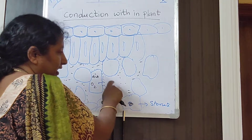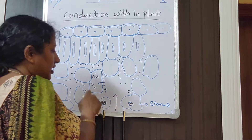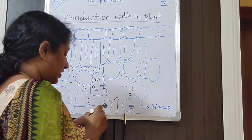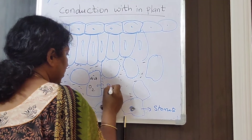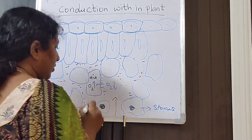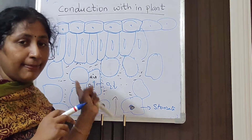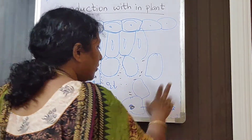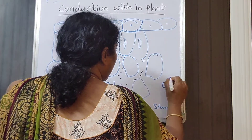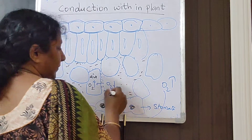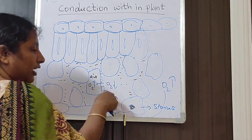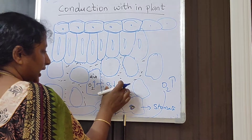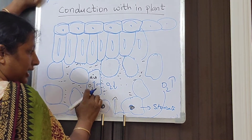Now there is an oxygen gradient: the cell has more oxygen while the surrounding area is oxygen deficient — oxygen is less there. The gradient has decreased. Outside in the atmosphere, oxygen is more, so it will enter through the stomata into the open spaces present between the cells. High to low — from high outside to low inside.